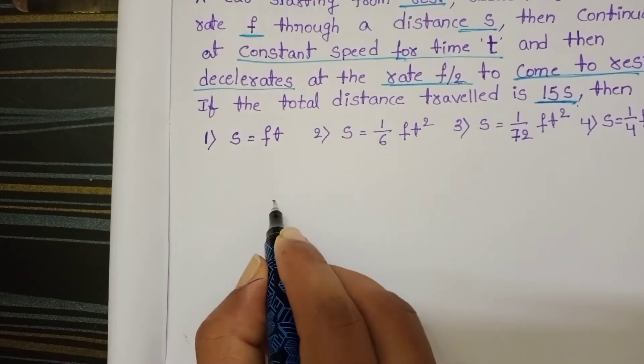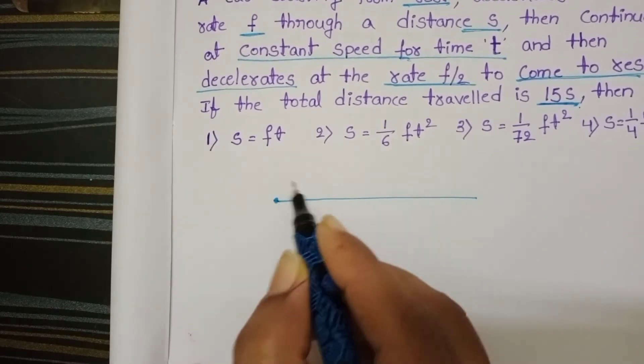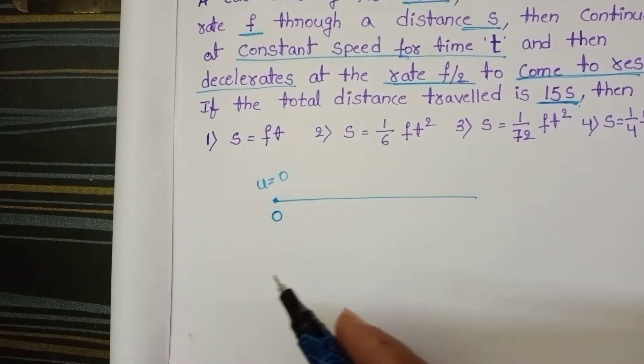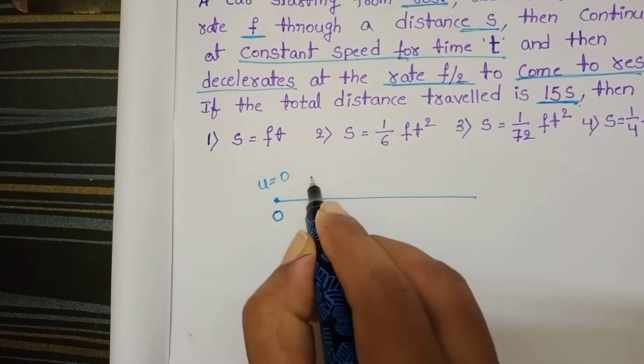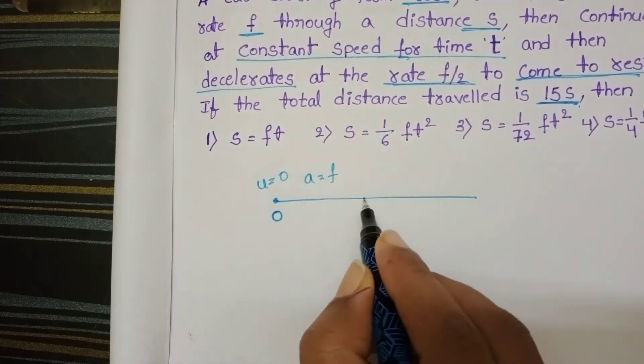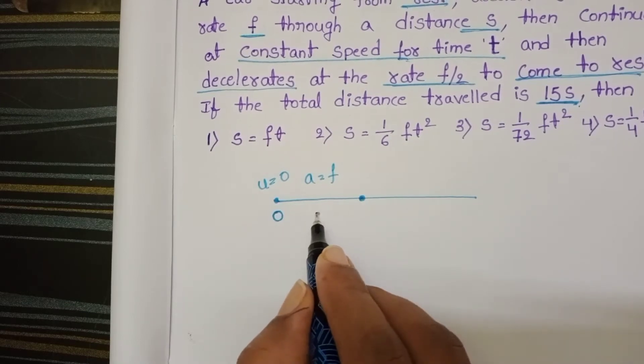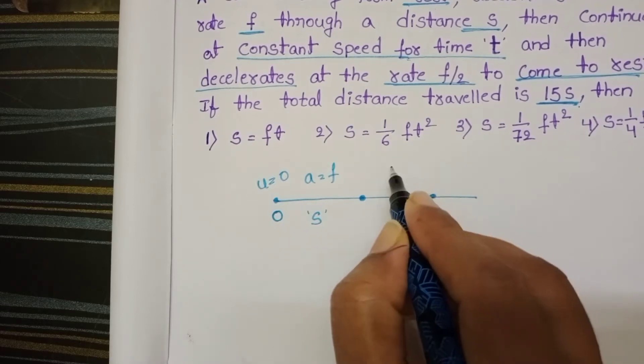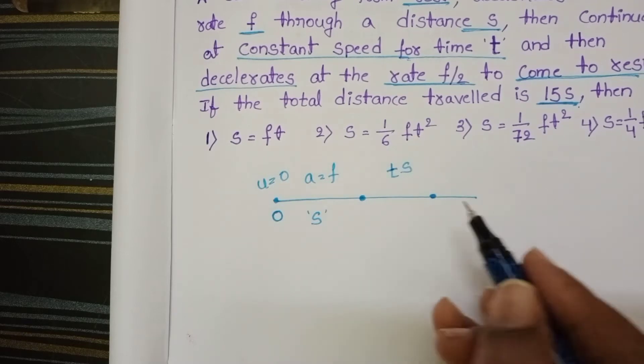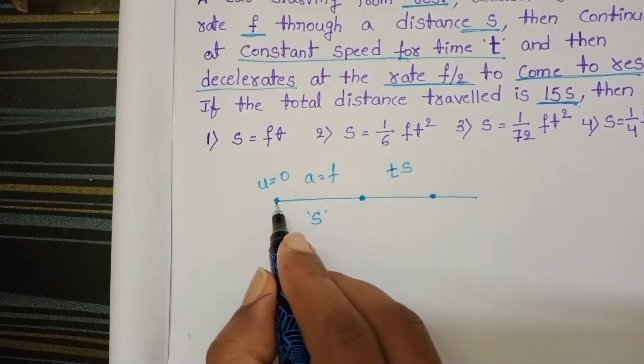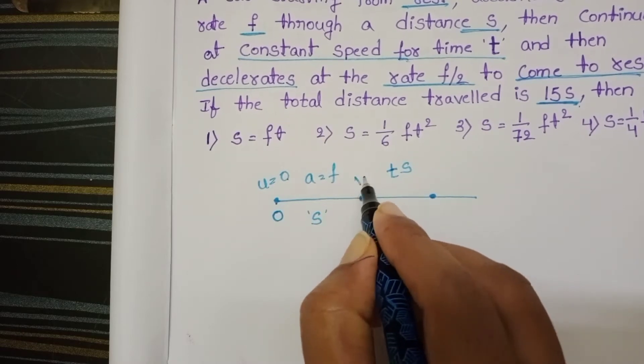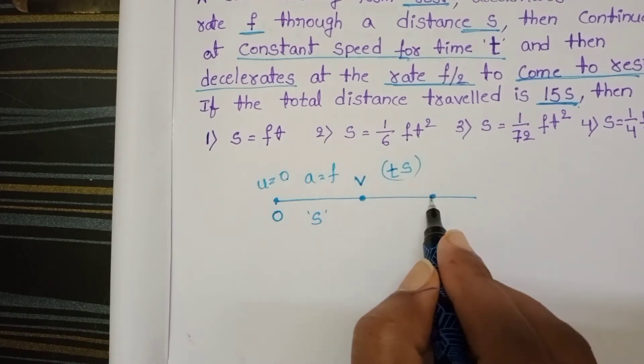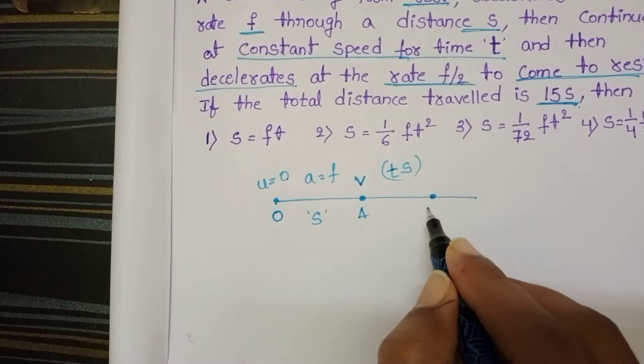So initially car is at rest position, u equals 0 and the car accelerates at the constant rate f and covers a distance s. And after up to certain time t seconds, it continues the same speed. So here initial speed is 0, final speed let it be v and up to t seconds, it continues the same speed. Take this point a and this point b.